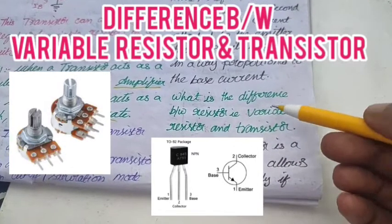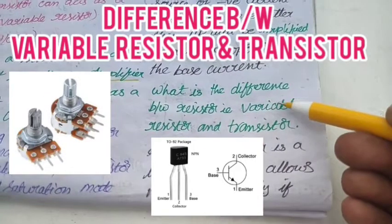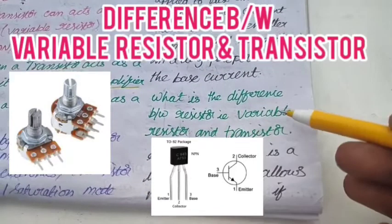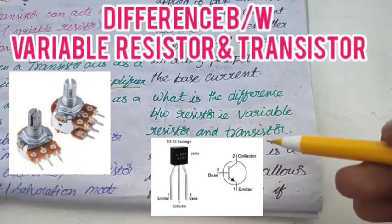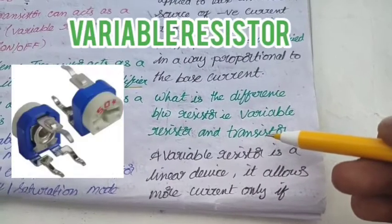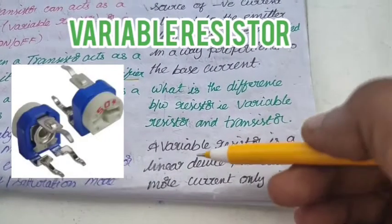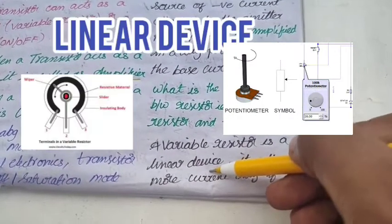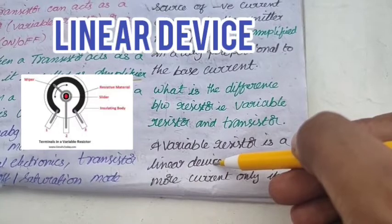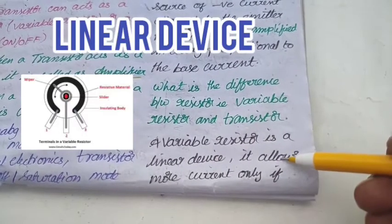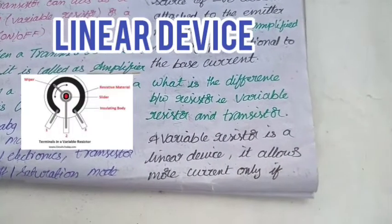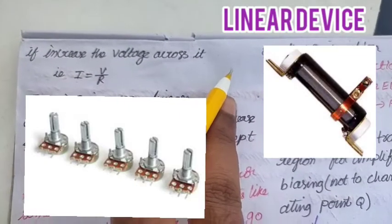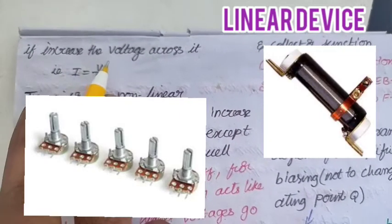But is there any difference between the variable resistor and transistor? Let's find out. A variable resistor is a linear device. What is meant by linear device? It means it allows current only if voltage increases. That means current value depends upon the voltage and resistor.